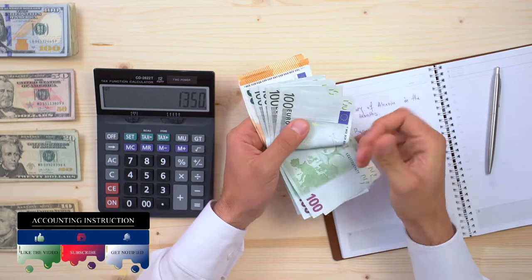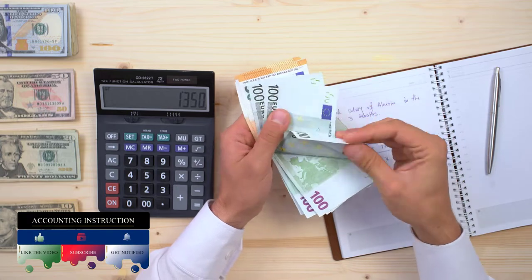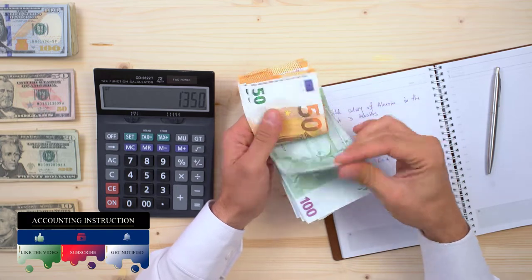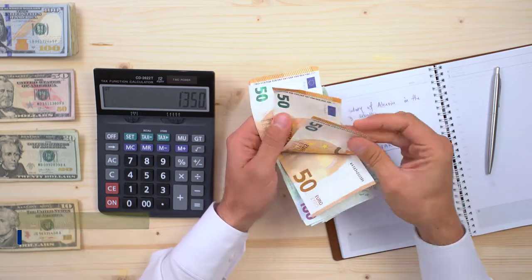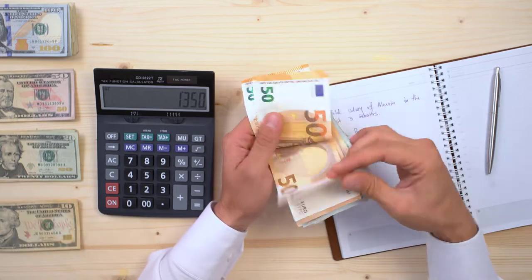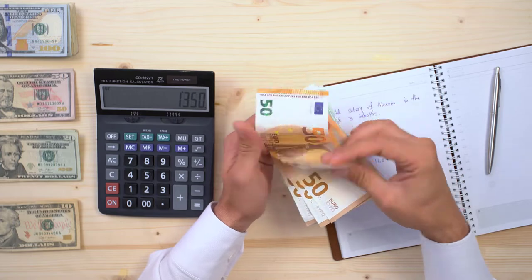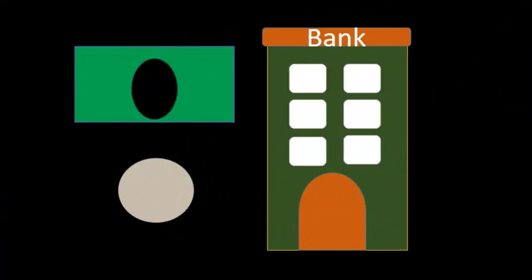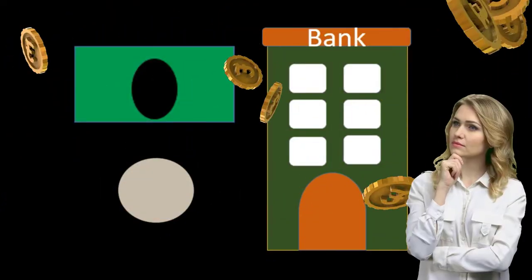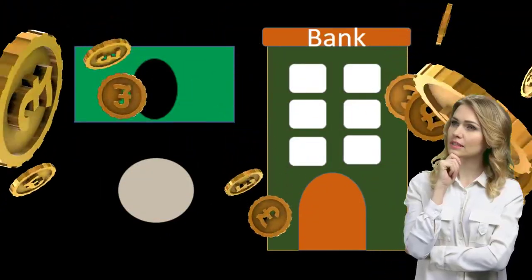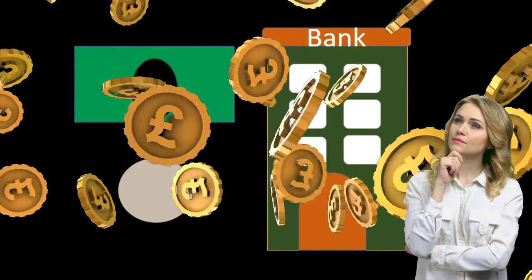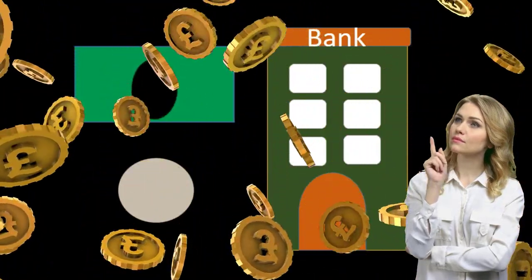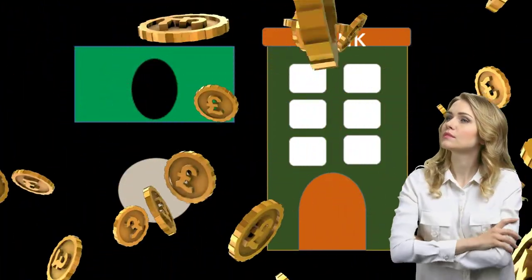So we're thinking about the hard cash, the currency, the coins, and the amount in the bank in terms of our checking account and savings account. This would be the most restricted kind of definition of cash.